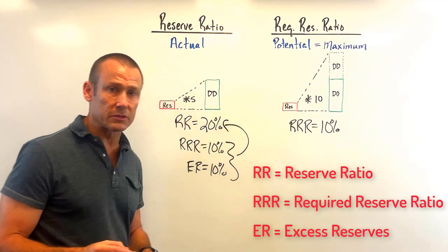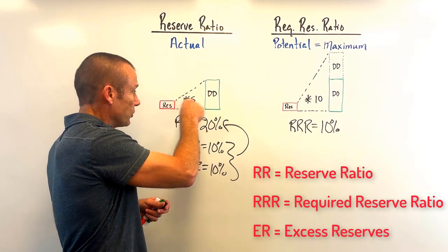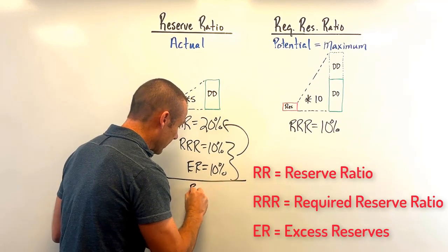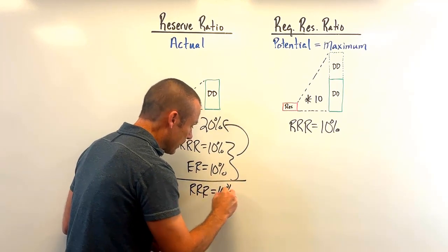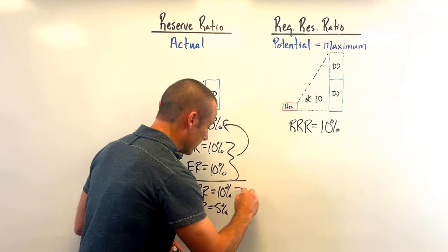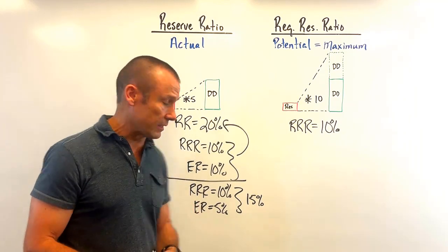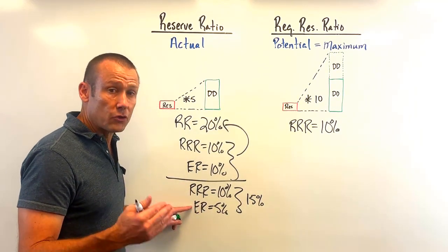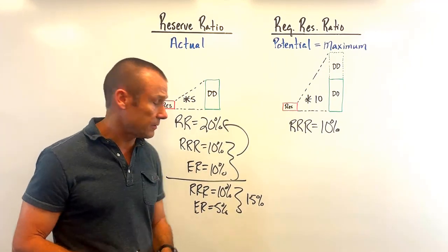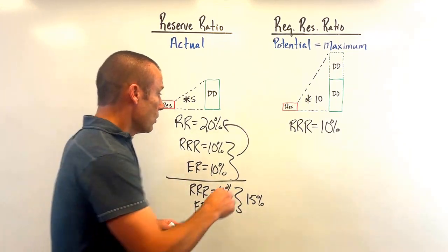The correct answer for excess reserves would be 10%, because 10% required plus 10% excess equals the 20% reserve ratio that's actually going on. Another problem might not show the actual ratio directly — it might just say the required reserve ratio is 10% and excess reserves are 5%, then ask what the reserve ratio is. The answer would be 15%, because banks must hold 10% but are also choosing to hold an additional 5%.